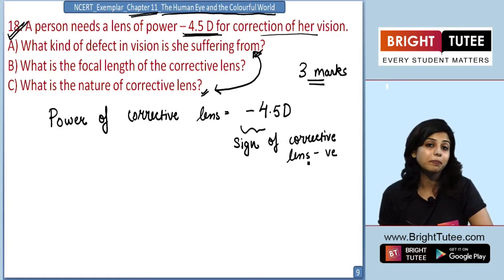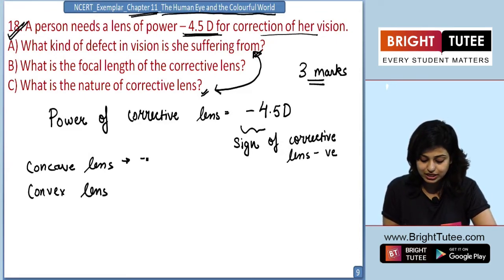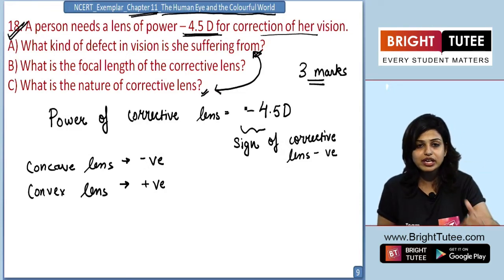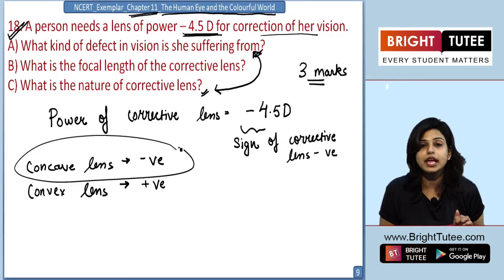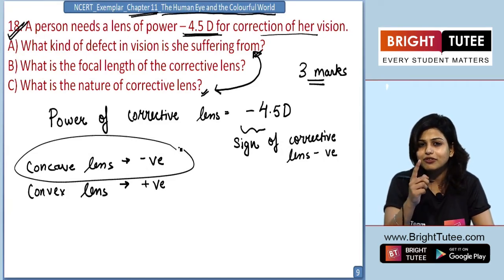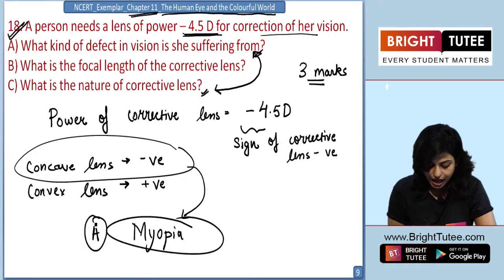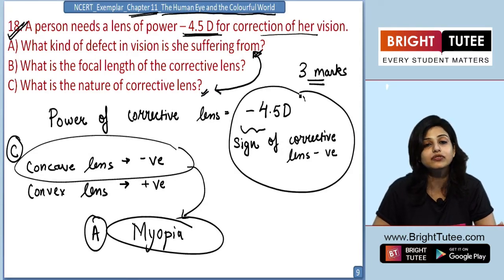From the previous chapter knowledge, concave lens and convex lens both have their power, but if the sign of the corrective lens is negative, which lens is the girl using? Correct, the lens is a concave lens. When a person is using a concave lens, which defect is that person suffering from? The answer is myopia. So we answered problem A and problem C in one go by just looking at the sign of the corrective lens.